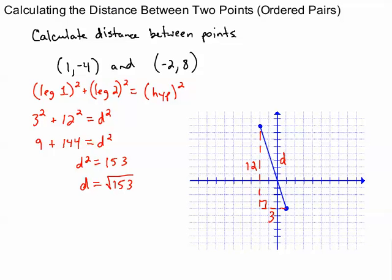But let's analyze this a little more closely. One way to figure out this 12 would be to take this top Y coordinate, which was 8. Right? 8. And then the bottom Y coordinate was negative 4. So you could take 8 minus negative 4.